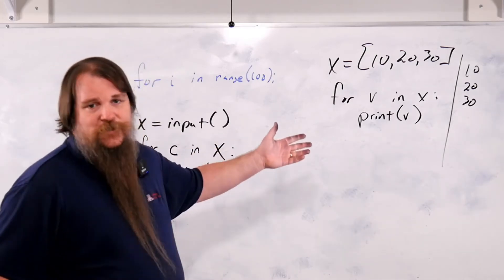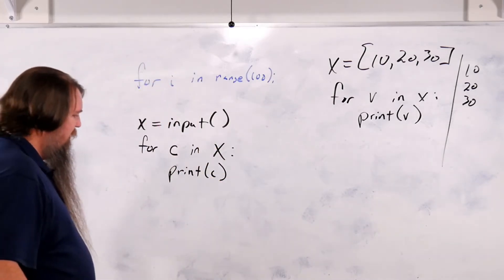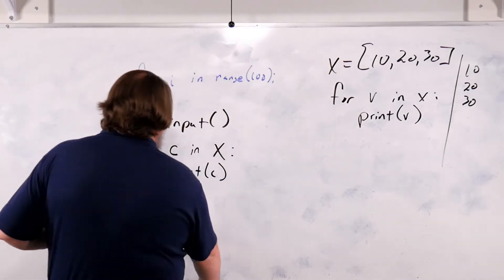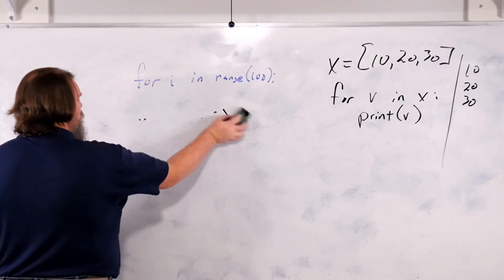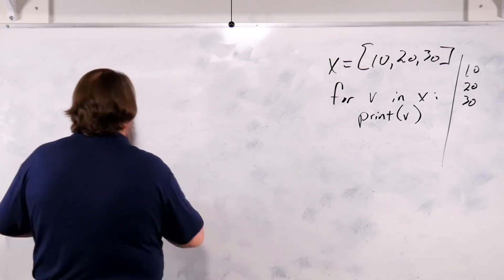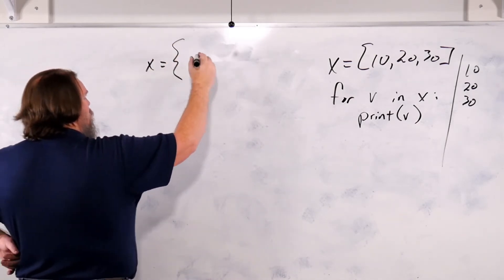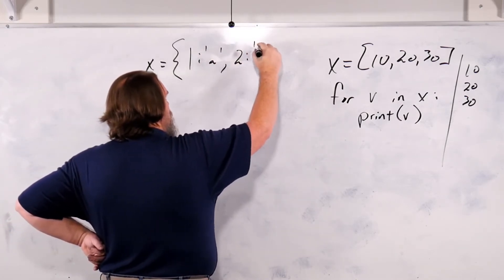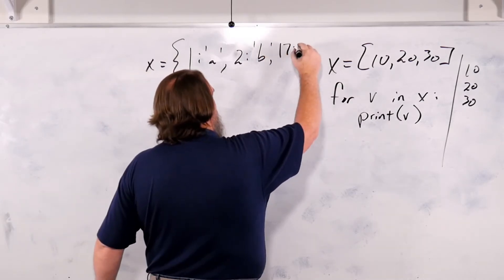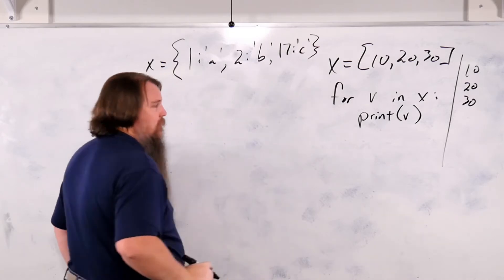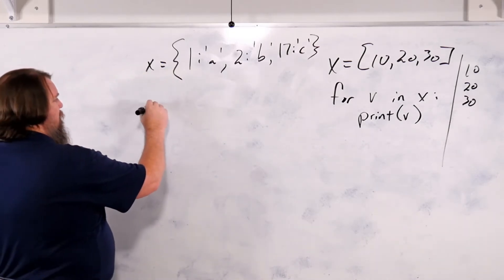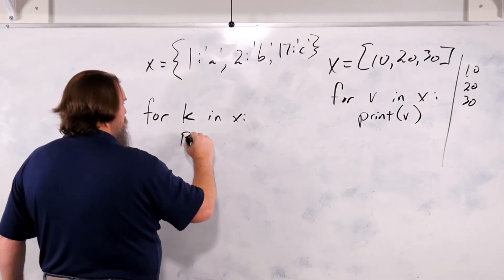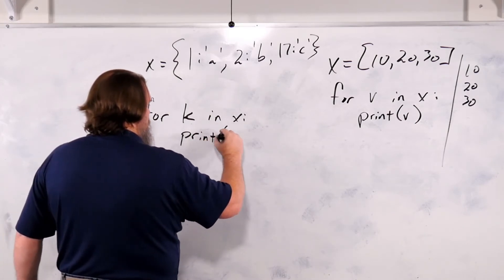Very cool. Can you do that over tuples? Yes, no change whatsoever. Can you do it over dictionaries? Yes, you can do a loop over a dictionary. `x = {1: 'a', 2: 'b', 17: 'c'}`. Now if you say `for k in x: print(k)`, what will this print?